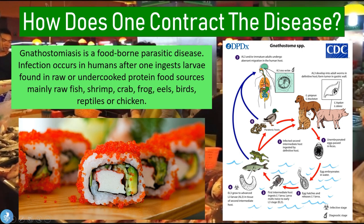Humans are capable of being infected at various stages of the cycle because if we ingest raw or undercooked protein food sources — including raw fish, shrimp, crab, frog, eel, birds, or even chicken — we can contract the disease. Now let's take a closer look at some signs and symptoms of this disease.